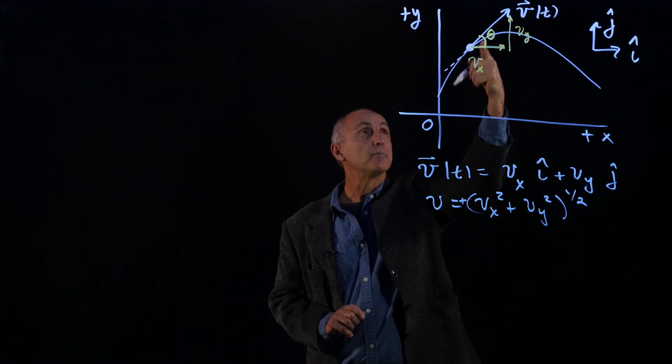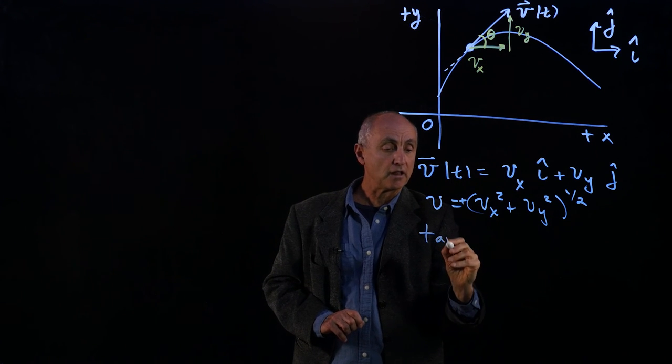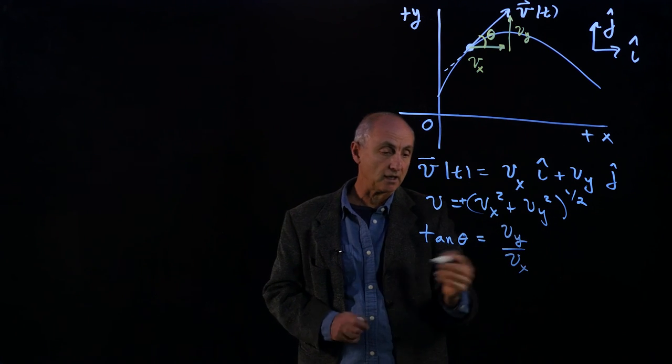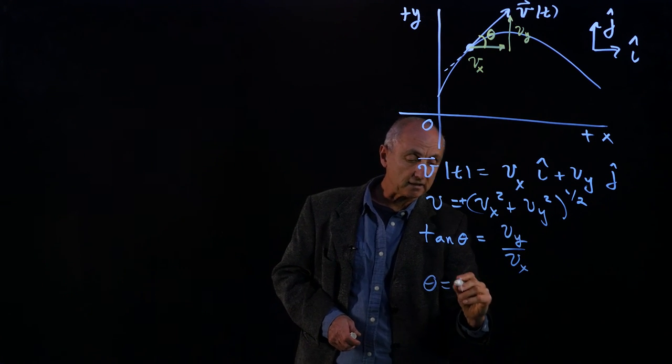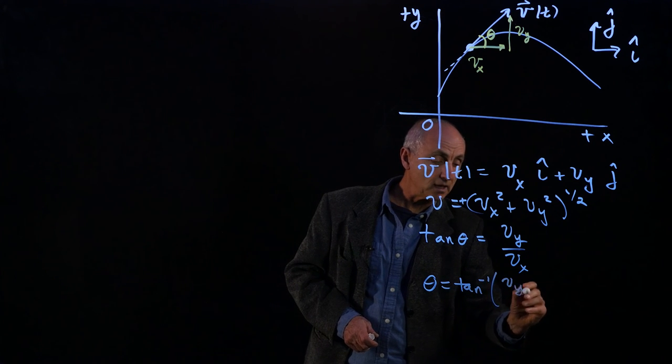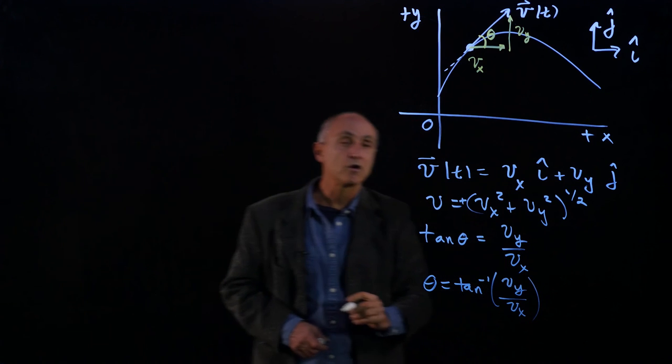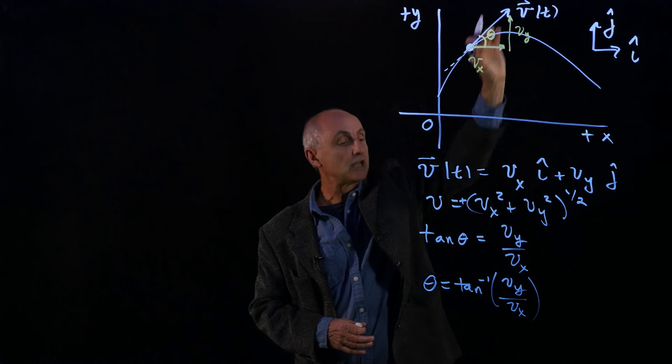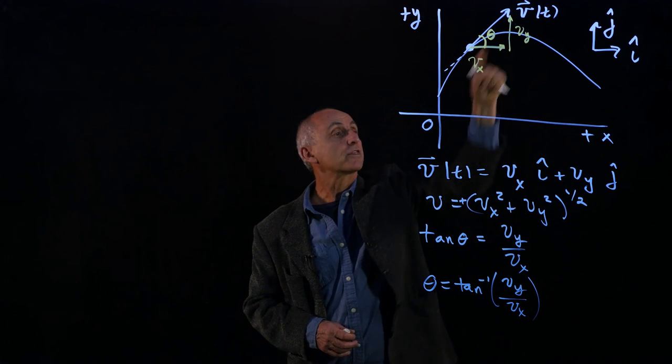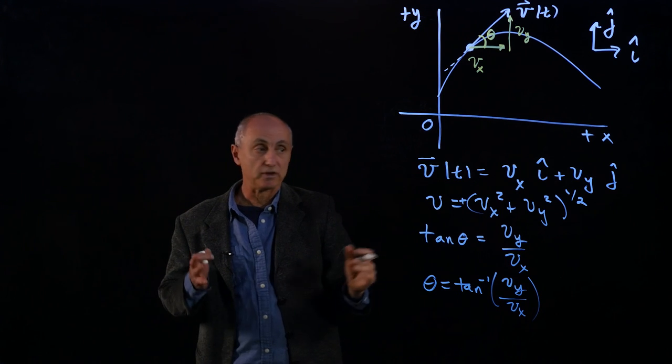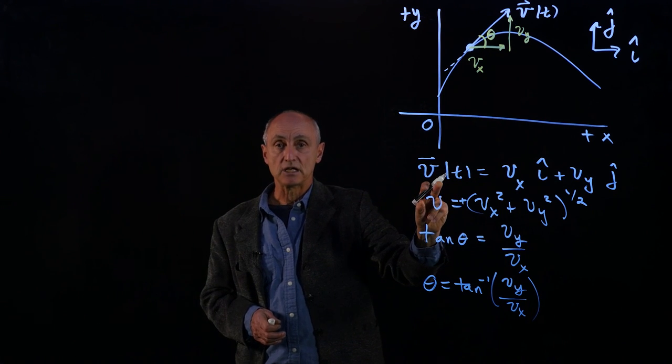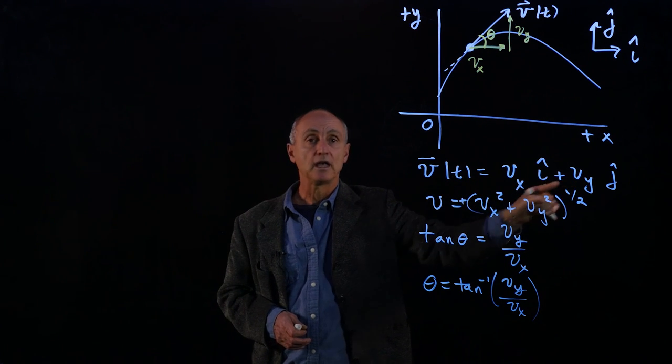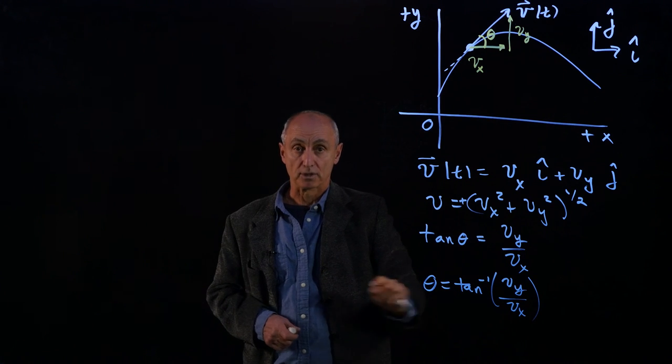And now what about the direction of this vector in the xy plane? We can see from our geometry that the tangent theta is given by the y component over the x component. Or one could say that the angle theta at this given time is the inverse function of vy over vx. And so now we've described not only the direction of the velocity, but the angle that it's making with the horizontal axis. We've now completely described the instantaneous velocity vector at time t, in terms of its two component functions, its speed, and the angle that it makes with the positive x-axis.